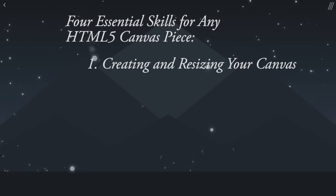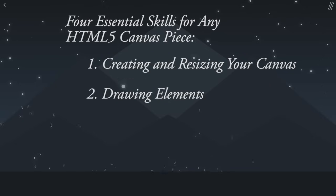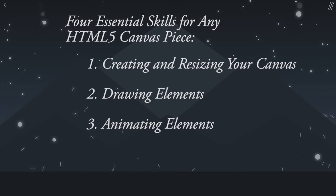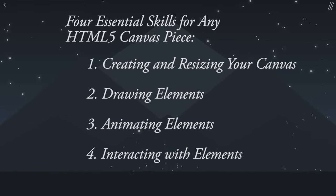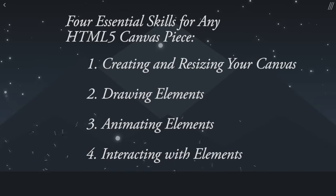Skill number one: you need to know how to create a canvas and resize it depending on your project's requirements. Skill number two: you need to know how to draw elements on the screen — what kind of elements can we draw and how do we do it. Skill number three: we need to know how to animate these elements — move them from one location to another and make it a smooth transition. Skill number four: we need to know how to interact with these elements, whether it be a mouse move, mouse down, mouse click, or even a touch or tilt on your phone.